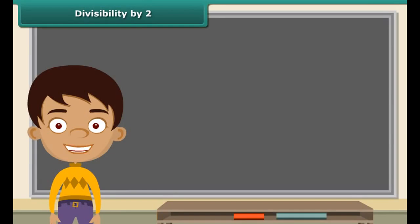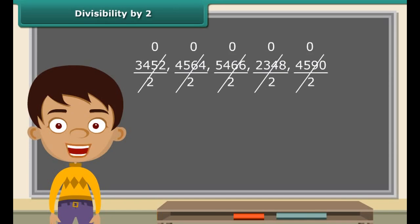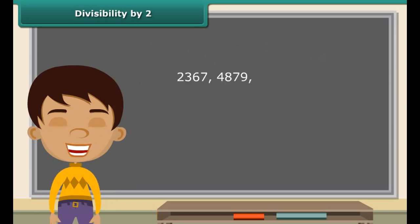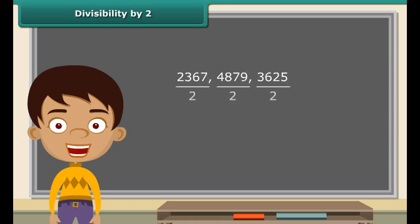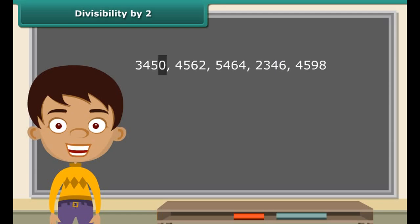Anuj knows that all numbers that end with 2, 4, 6, 8, or 0 are even numbers. He randomly picks up some numbers that end with 2, 4, 6, 8, or 0 and divides them by 2. He observes that each of these leave a remainder of 0 when divided by 2. He then picks up some numbers that do not end with 2, 4, 6, 8, or 0 and divides them by 2. He observes that all such numbers leave a remainder other than 0. Therefore, he concludes that a number is divisible by 2 if it has the digit 0, 2, 4, 6, or 8 in its ones place.